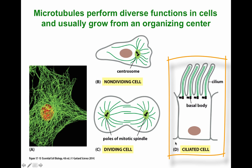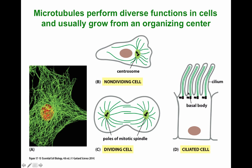Last but not least, shown here in D, we have a ciliated cell, and the microtubules form part of the cilium and also the flagella. At the base of the cilia and flagella, what you're going to find is a specialized centrosome called the basal body. From the basal body is where you're going to have the polymerization of the microtubule to form the moving units that propel the cell around. So three different functions: one, microtubules form a dense network inside the cell for movement of vesicles and membrane; two, cell division to help separate chromosomes; and three, as the structure and powerhouse to move cilia and flagella for cell motility.